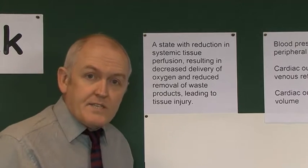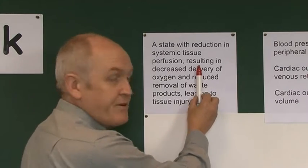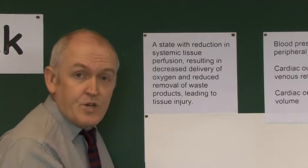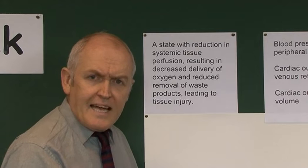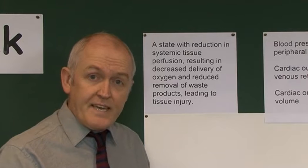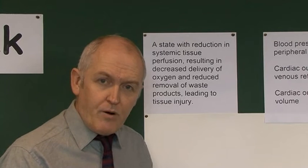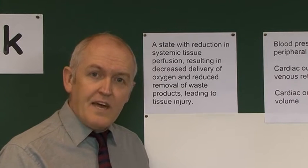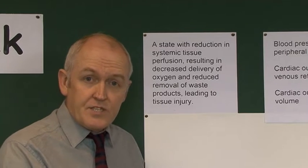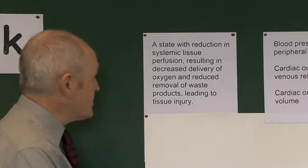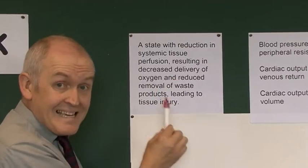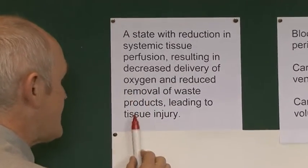Why does this matter? Perfusion is necessary to deliver oxygen to the tissues, to deliver nutrients to the tissues, and to remove the waste products of metabolic processes from the tissues. If there's not an adequate circulation, the tissues will become hypoxic, they will become malnourished, and they will start to be poisoned by the accumulation of their own toxins which are not washed away in the blood. This results in decreased delivery of oxygen and reduced removal of waste products.